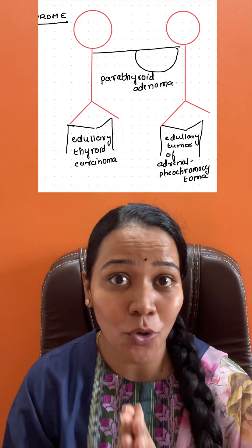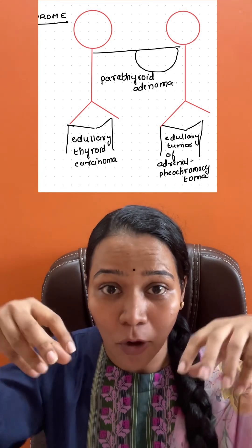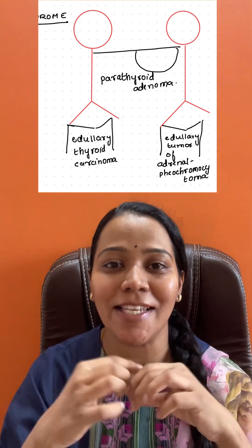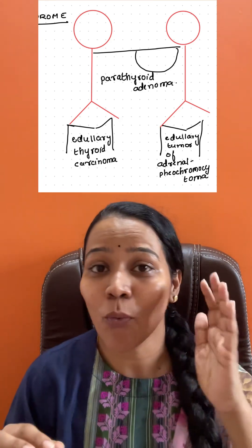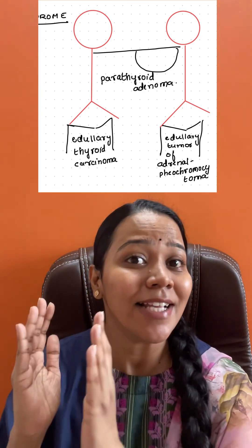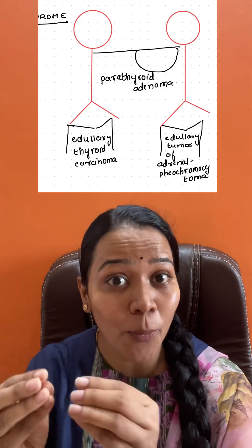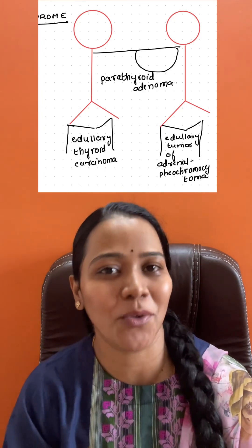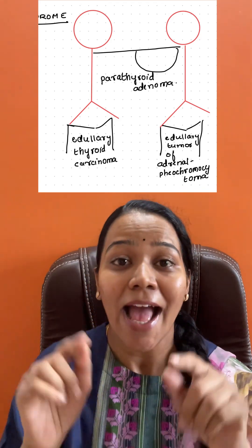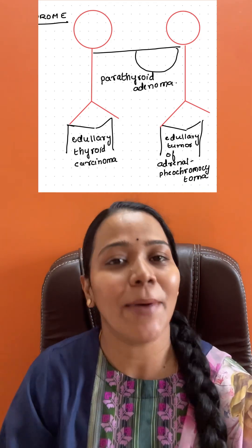For MEN 2, draw two men standing on '2M' and holding a 'P' near the neck. The first M is medullary thyroid carcinoma, the second M is medullary tumor of the adrenal or pheochromocytoma, and the P they're holding near the neck is parathyroid adenoma, because parathyroid is located near the neck.